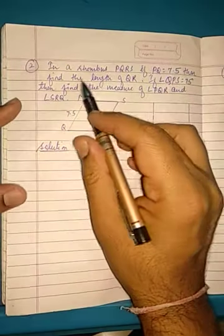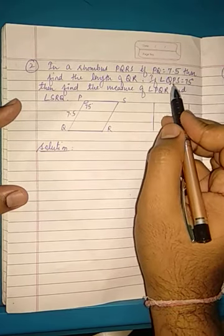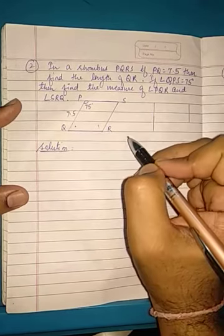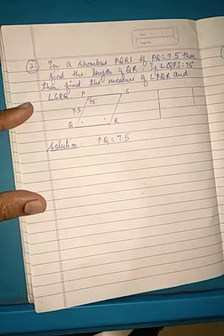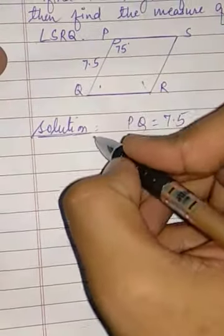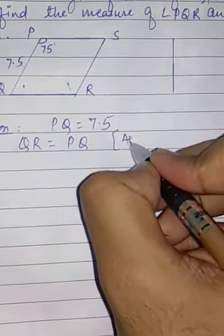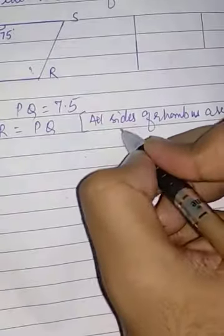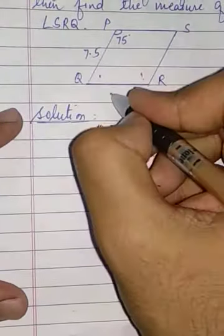Students, let us see the second problem of 5.3. In a rhombus PQRS, if PQ is 7.5, then find the length of QR. Since all sides of a rhombus are congruent, QR is equal to PQ. So QR is also 7.5. That is your required answer: 7.5.